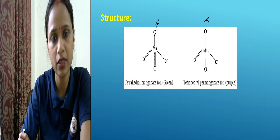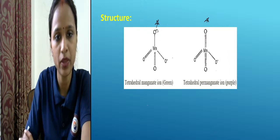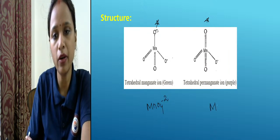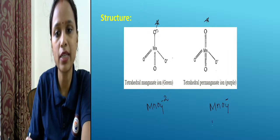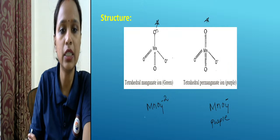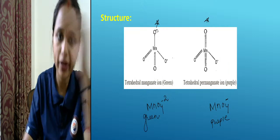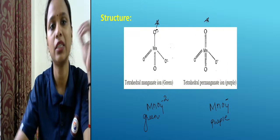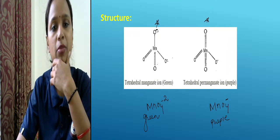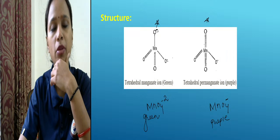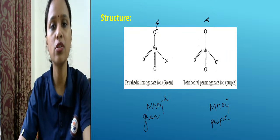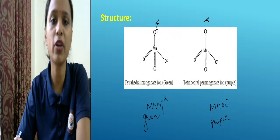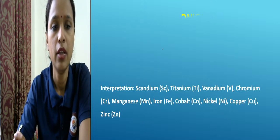The structure is similar to chromate. Permanganate (MnO₄⁻) has minus 1 charge; manganate (MnO₄²⁻) has minus 2 charge and is green in color. In permanganate, manganese forms two double bonds and two single bonds with oxygen. This is the structure of potassium permanganate.